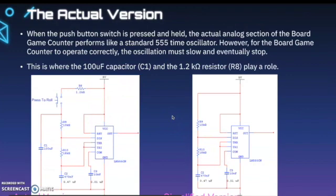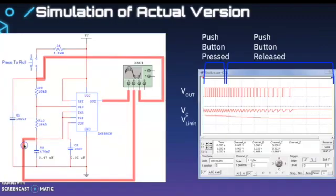When the push button switch is pressed and held, the actual analog section performs like a standard 555 timer oscillator. However, for the board game counter to operate correctly, the oscillation must slow and eventually stop. That's where that 100 microfarad capacitor and the 1.2 kiloohm resistor play a key role. The simplified version would keep going, but we have to add this 1.2 kiloohm resistor and C1 into the circuit to allow that oscillation to eventually stop.